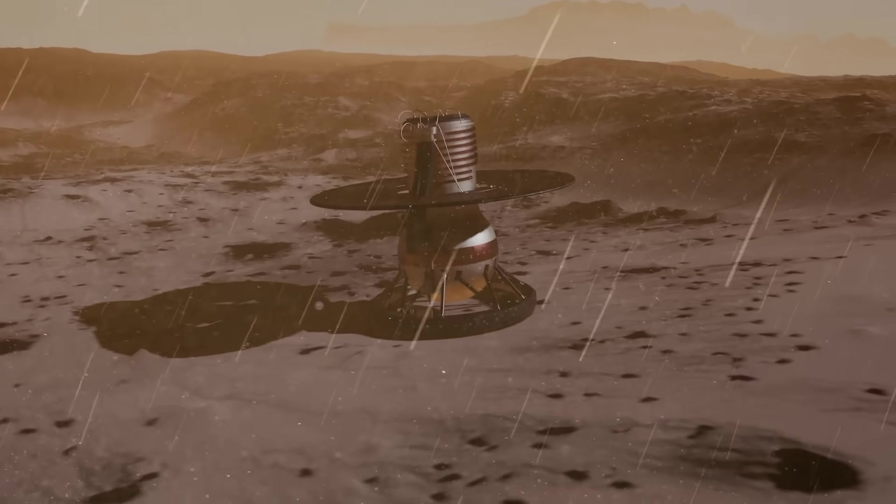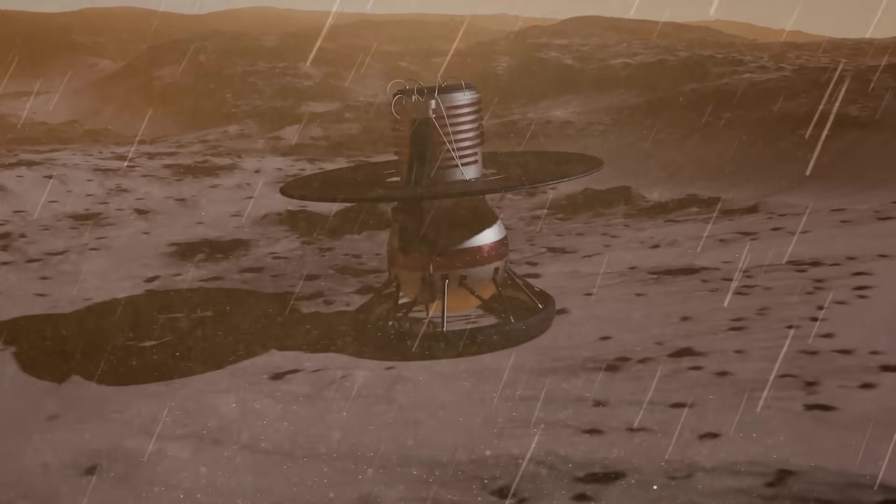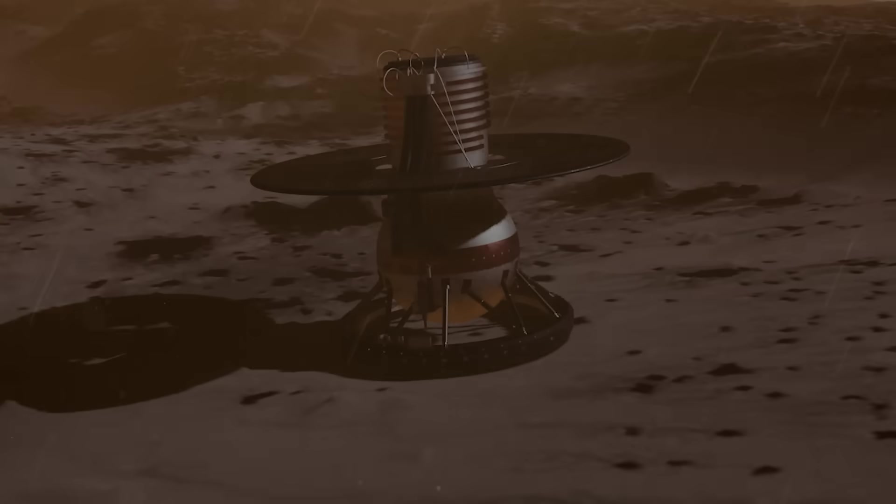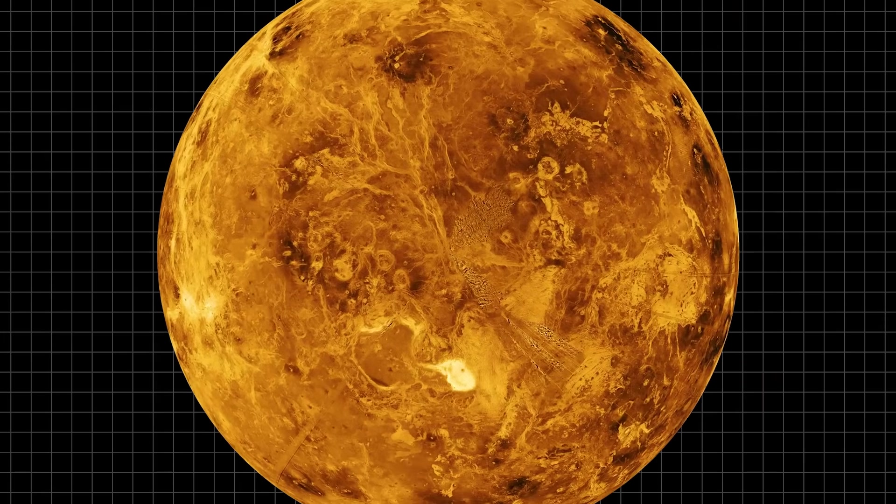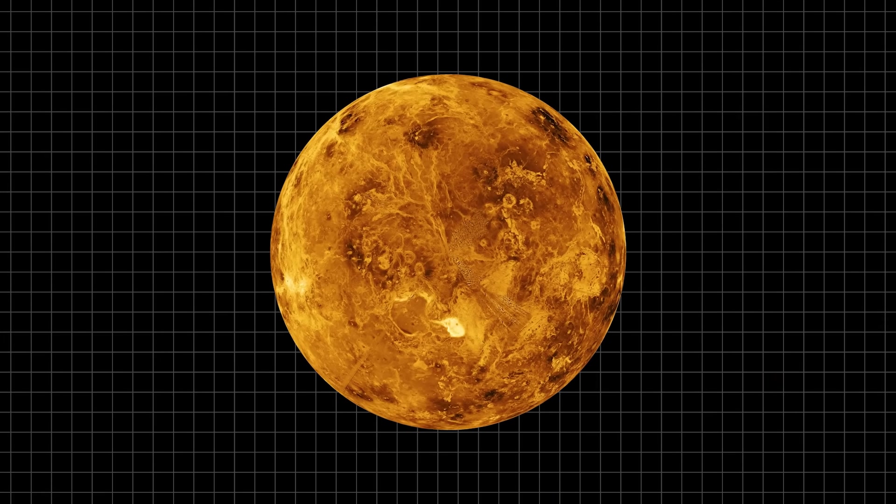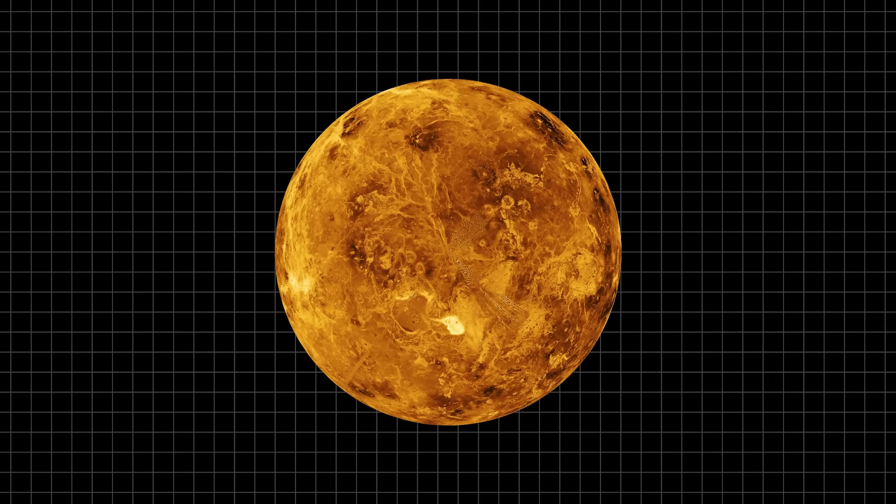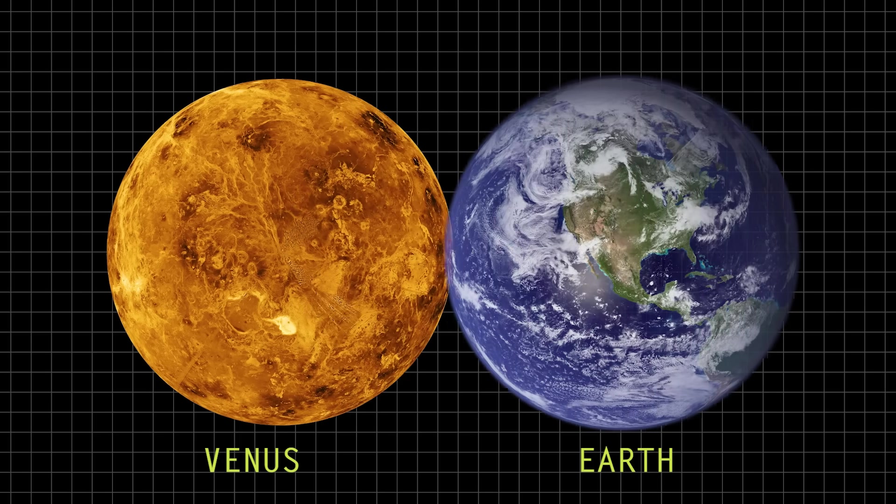This is what the Soviets found when they landed on Venus and why they never went back. The real mystery of Venus is how it can be so fundamentally similar to the Earth and yet so catastrophically different.